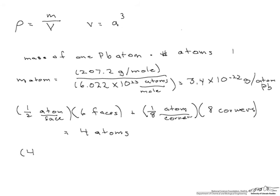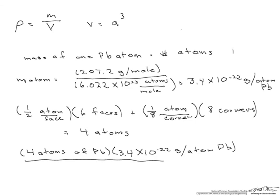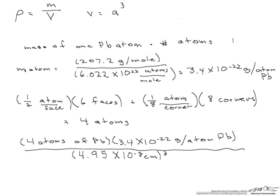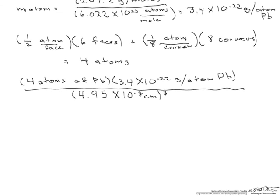So we multiply 4 atoms of lead by 3.4 times 10 to the minus 22 grams per atom of lead. And that's our mass. And we divide this by our volume, which is a cubed, or 4.95 times 10 to the minus 8 centimeters cubed. And we're going to end up with a density in grams per centimeter cubed of 11.3 grams per centimeter cubed.